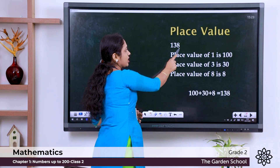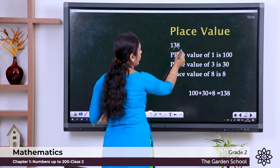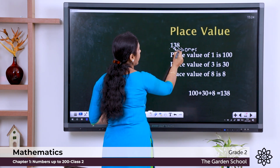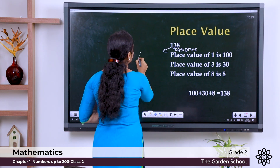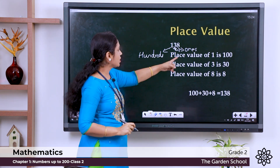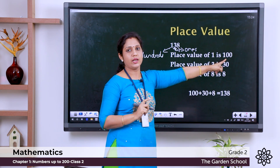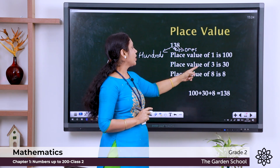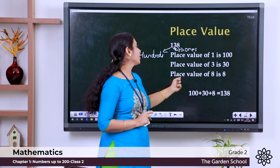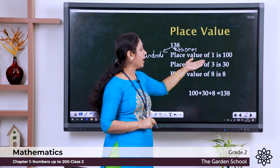This is how we check the place value for 138. 8 is in the ones position, 3 is in the tens position, and 1 is in the hundreds position. We always check from the right side: ones, tens, hundreds. So the place value of 1 is 100, the place value of 3 is 30 because 3 tens make 30, and the place value of 8 is 8. So the number is 138.